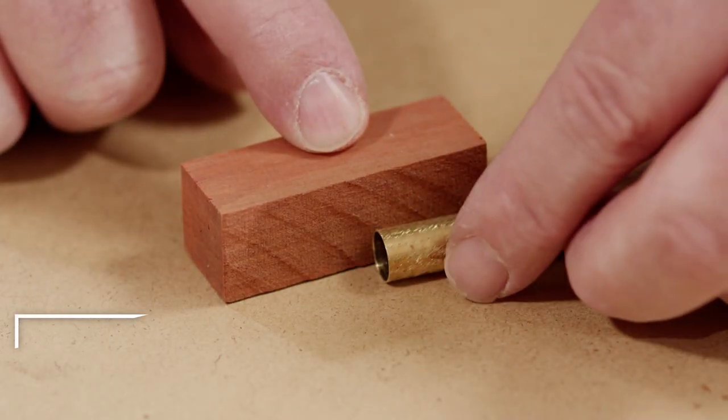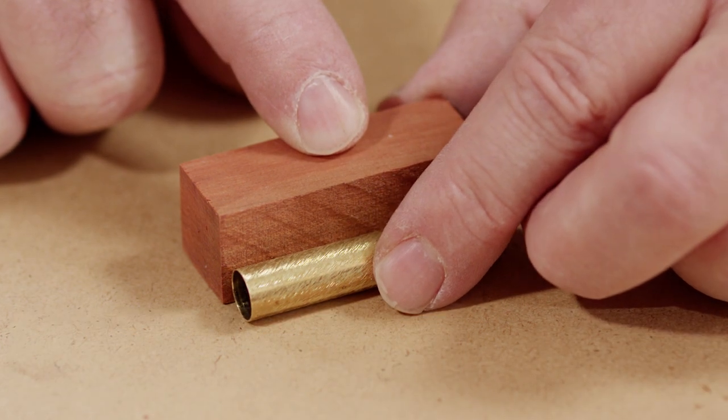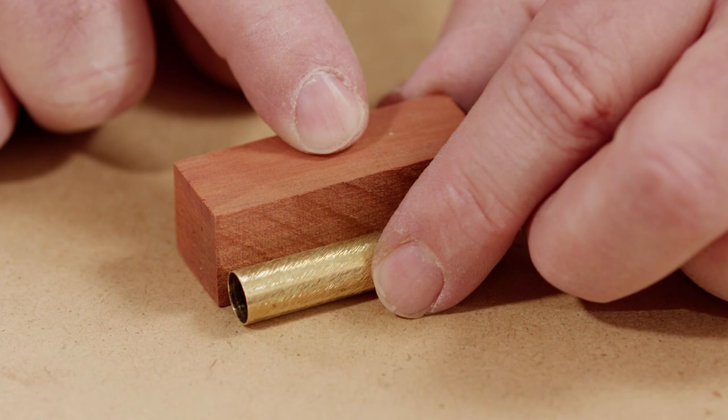To get started, line up your pen tube with your blank and cut your blank 1/16th to 1/8th inch longer than your kit's pen tube.